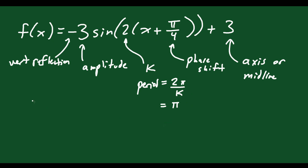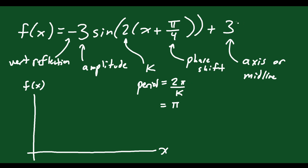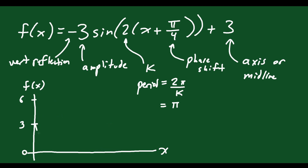So if I want to graph this, I'll set up axes with x and f(x). The axis is at 3. The amplitude is 3, so the maximum height will be 6 and the minimum height will be 0. It is a sine function but with a vertical reflection, so it's upside down. You can draw a dotted line to show the axis — that's really helpful.